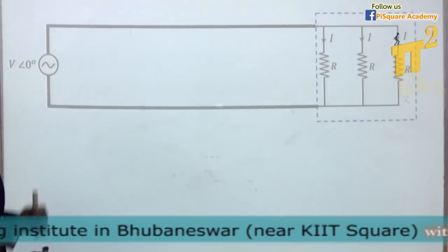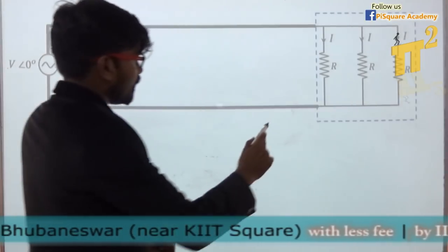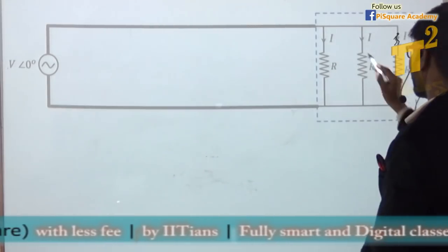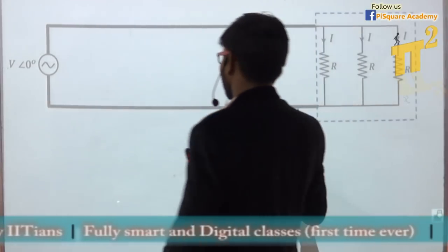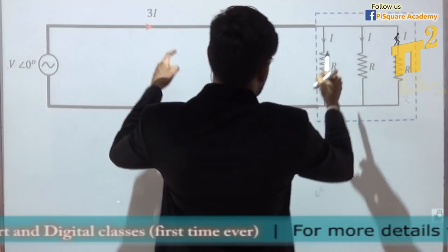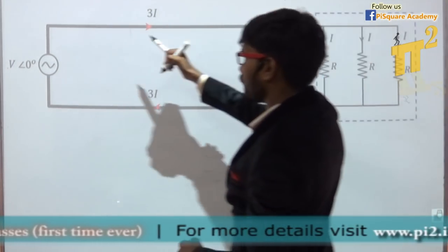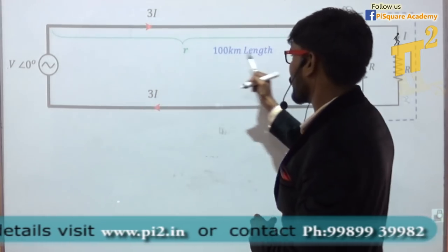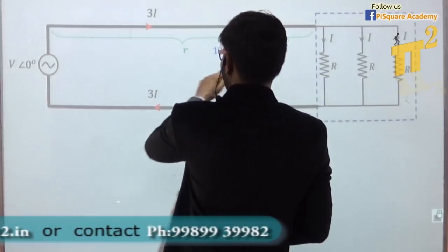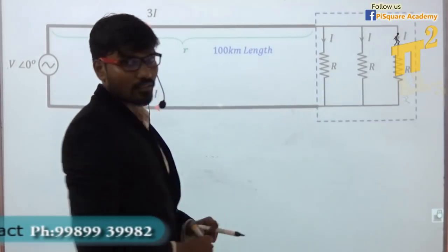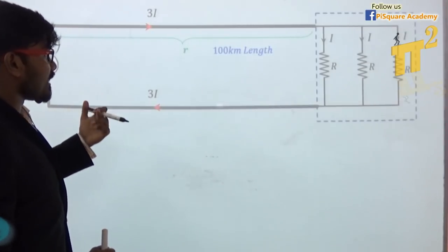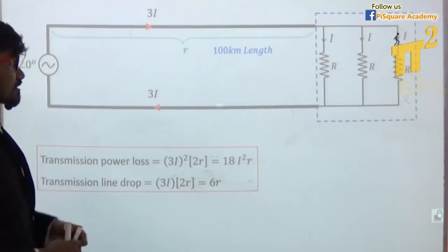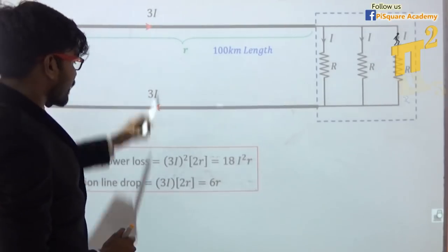Now let's go to the second point: how transmission line losses are reduced by 50%. Let me take a single-phase AC source with 3 loads of resistance value R, each driving a current of I. Through this transmission line — which I assume is 100 km in length — the total current is 3i, because all 3 currents add up. Transmission line losses equal I²R. The current is 3i, so I² is (3i)².